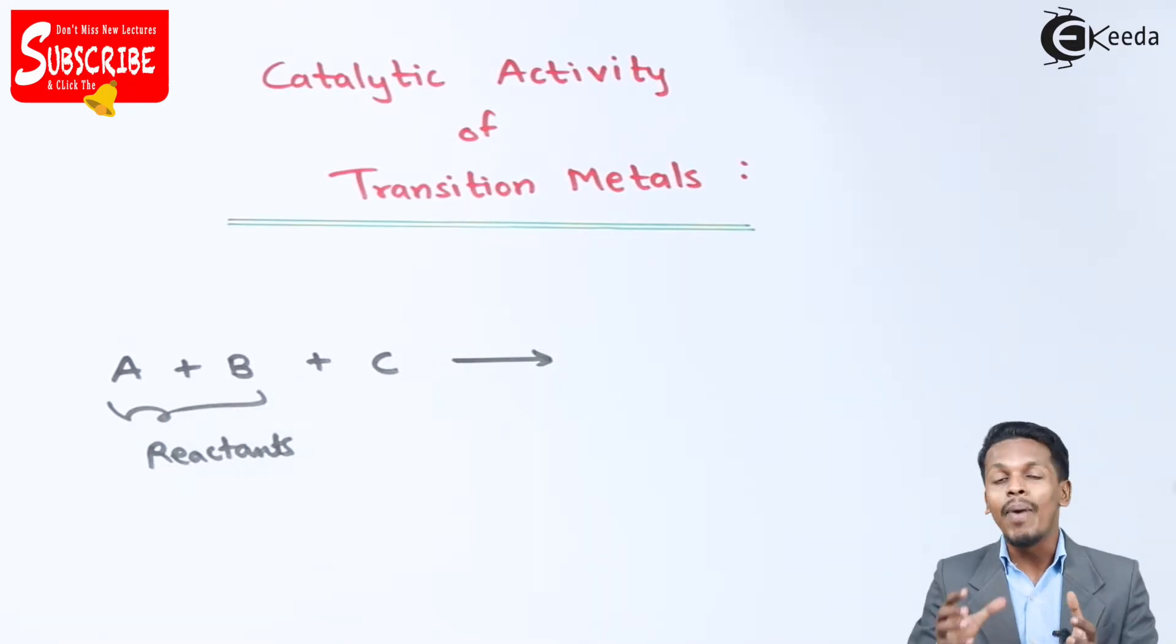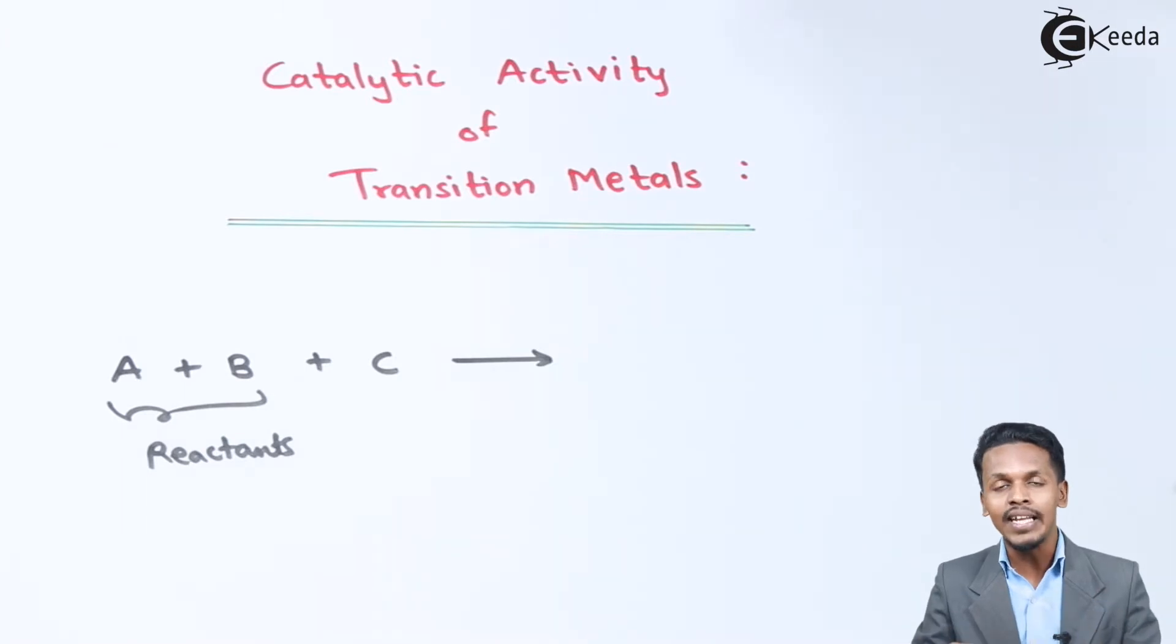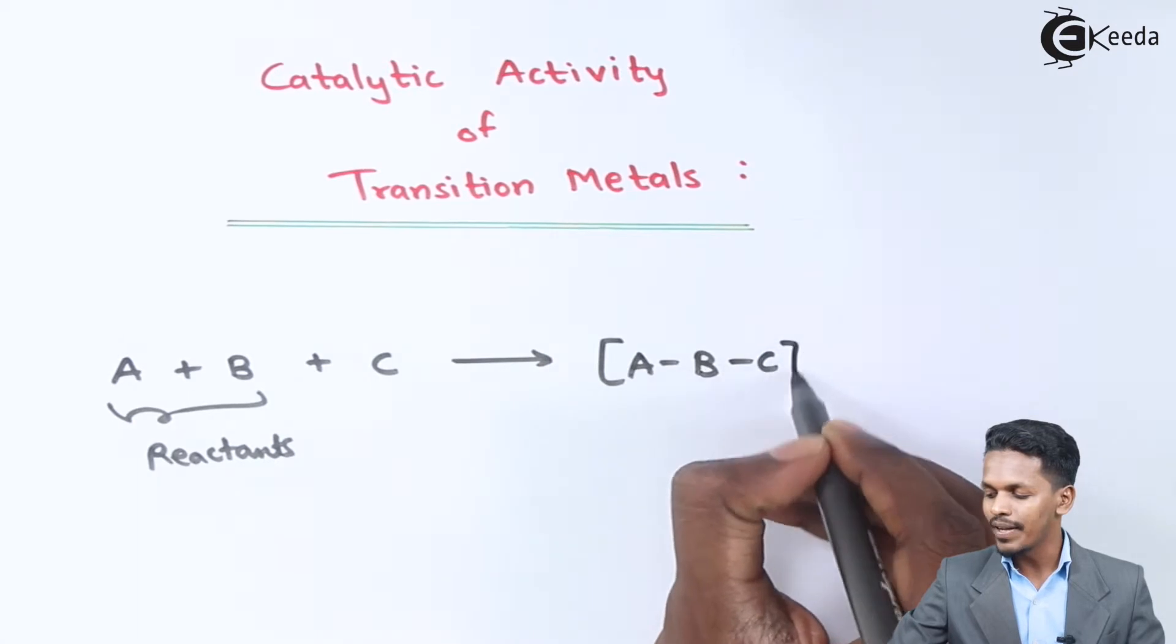The catalyst consists of the transition metal or it could be a complex. The catalyst binds with the reactants and that binding gives us an A-B-C complex.